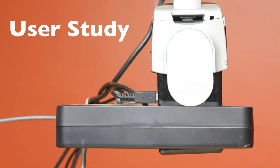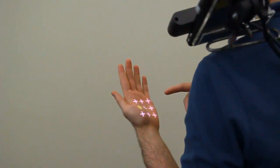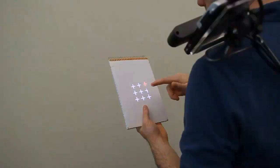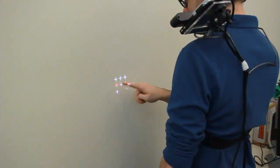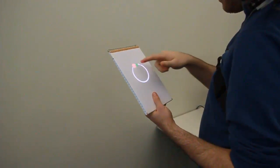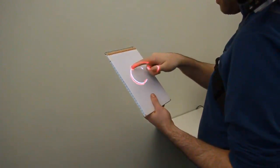To evaluate the performance of our system, we conducted a user study. Participants completed crosshair clicking trials on the hand, arm, pad, and wall. To investigate dragging performance, participants also completed a series of drawing tasks.